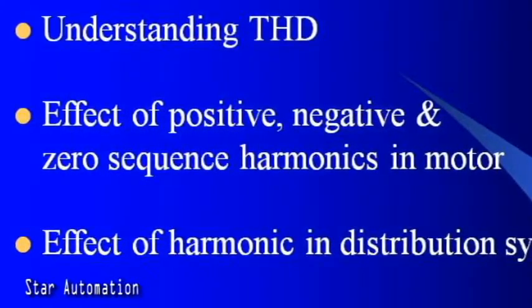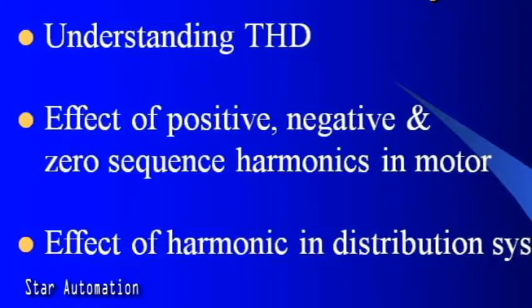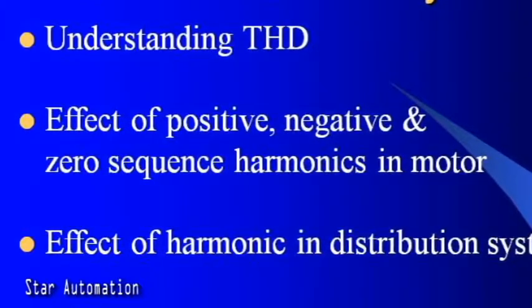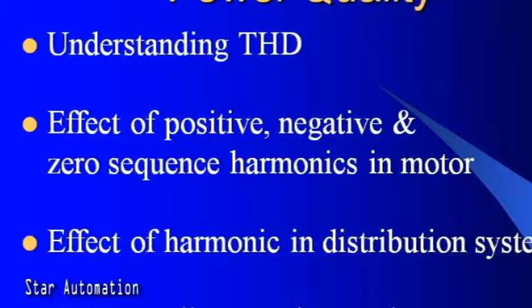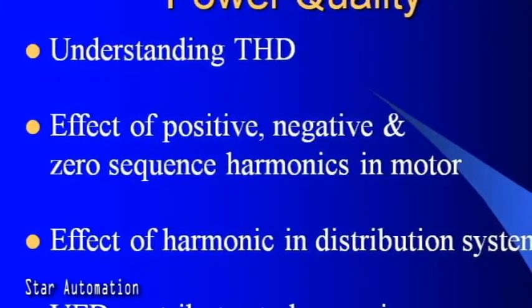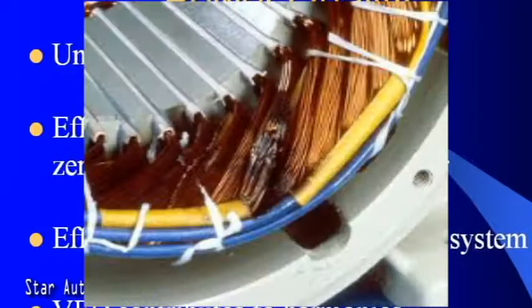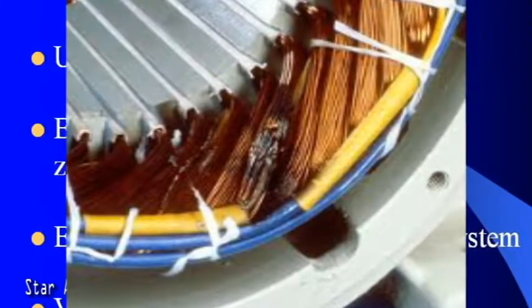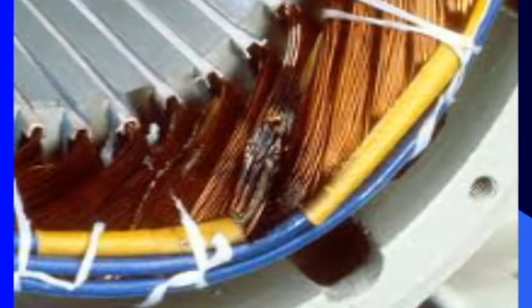Positive sequence harmonics (harmonic numbers 1, 4, 7, 10, 13, etc.) produce magnetic fields and currents rotating in the same direction as the fundamental frequency. Negative sequence harmonics (harmonic numbers 2, 5, 8, 11, 14, 15, etc.) develop magnetic fields and currents rotating in the opposite direction. Zero sequence harmonics (harmonic numbers 3, 9, 15, 21, etc.) do not develop usable torque but produce additional losses. The interaction between positive and negative sequence fields produces torsional oscillations of the motor shaft, resulting in shaft vibrations.